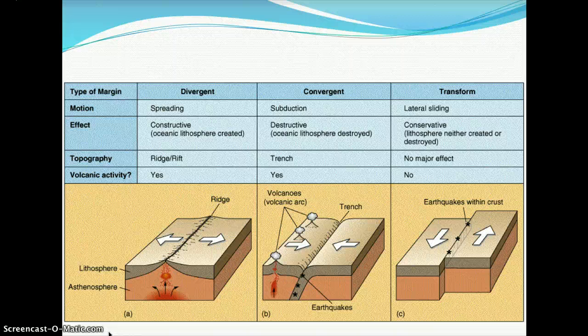The second type is convergent, where the motion is subducting — one plate moves beneath the other, with oceanic lithosphere being destroyed as it slides under another oceanic or continental crust. This is where you have trenches, such as the Marianas Trench, along with volcanic activity.